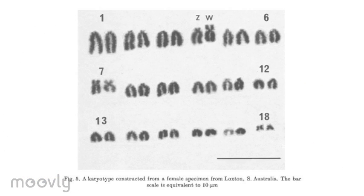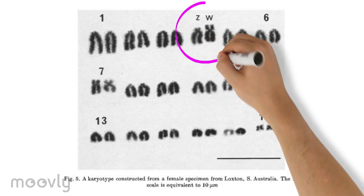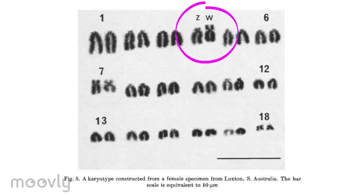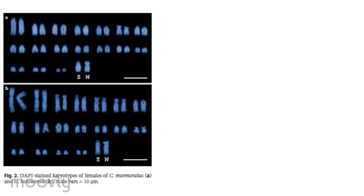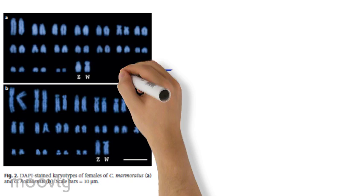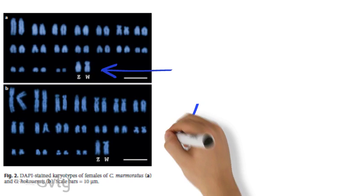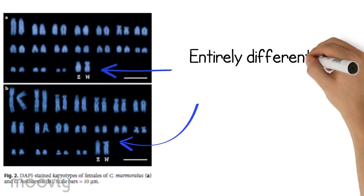Previous studies suggest that Christinus has non-homologous sex chromosomes with female heterogamity. In addition, it appears that this sex determination mechanism has a relatively recent origin, independent of that of other gecko species with female heterogamity.